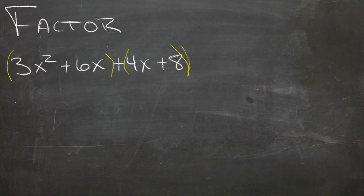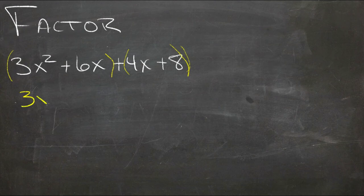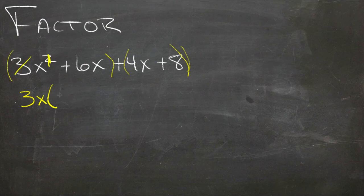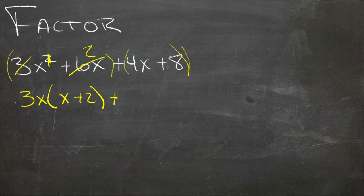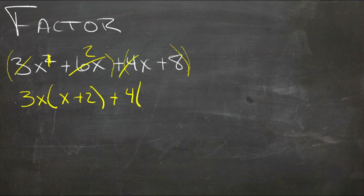So 3x squared and 6x, those both share 3x, so we can pull that 3x out, and here we'd be left with just x to the first, so we'll have an x to the first inside. And then if we pull 3x out of 6x, we get 2, so we'll have x plus 2 inside. And then we'll add that 2. Here we can pull, looks like a 4 out, so 4 times x plus 8 divided by 4 is 2, x plus 2.